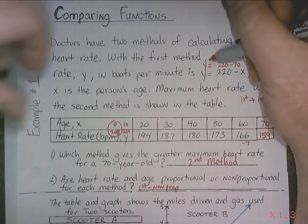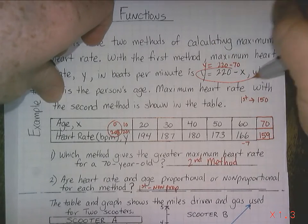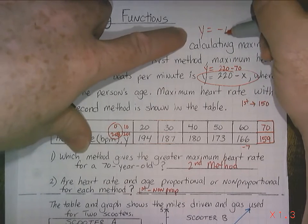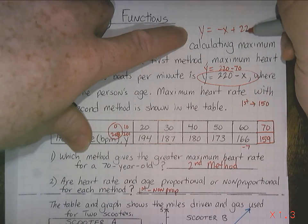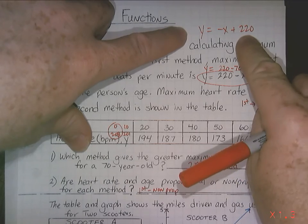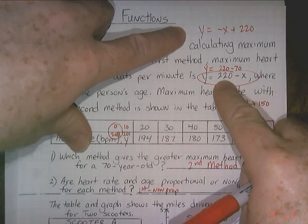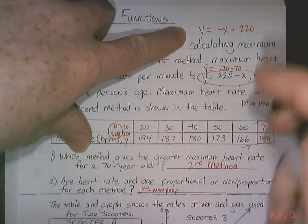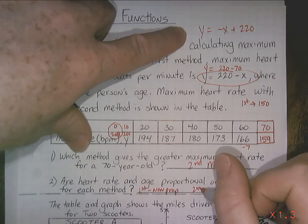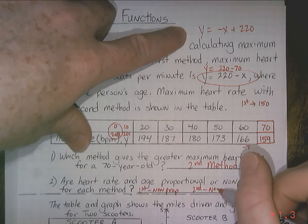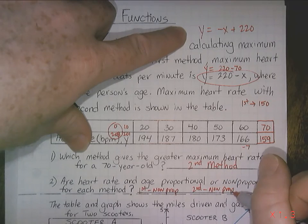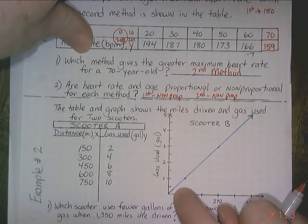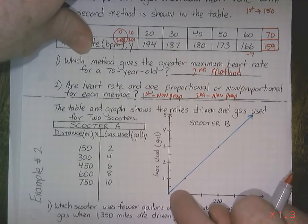If you were to rewrite this equation in slope-intercept form, this would be y equals negative x plus 220. Well, you've got a y-intercept here. That is your y-intercept. Because you have a y-intercept that's not 0, the second method also is non-proportional.